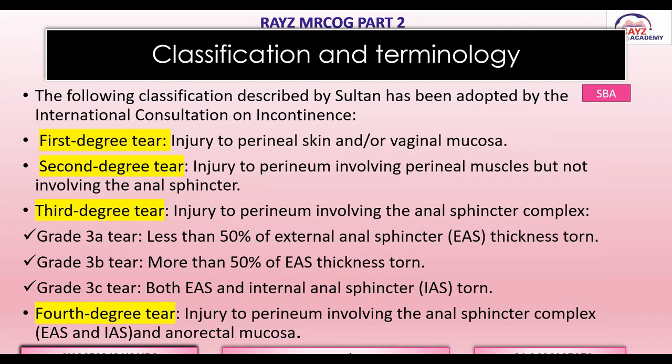The classification of perineal tears was given by Sultan and has been adopted by the International Consultation on Incontinence. Perineal tears are divided into four types. First degree tear means injury to the perineal skin and/or vaginal mucosa. Second degree tear, which includes episiotomy, means injury to the perineum involving the perineal muscles but the sphincter is intact — there is no injury to the anal sphincter.